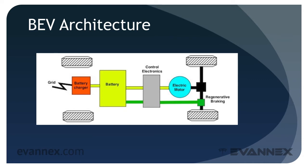Energy stored in the battery is passed through control electronics, represented in gray, that moderate the energy flow and pass it to an electric motor, shown in blue. Regenerative braking, in green, translates kinetic energy of the car's forward motion into electricity and returns energy back to the battery. Let's take a look at each of these components in just a bit more detail.